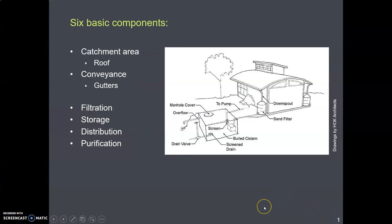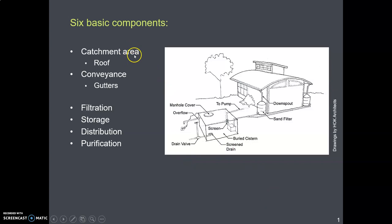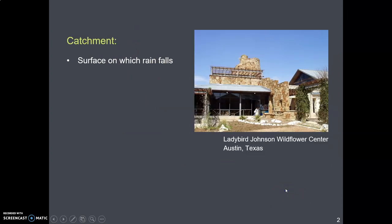Now let's look at the various elements of a rainwater harvesting system. There are six basic elements, and in this lecture we'll cover catchment, which is the roof, and conveyance, which is the gutters.